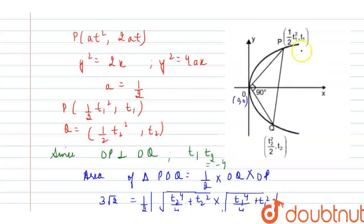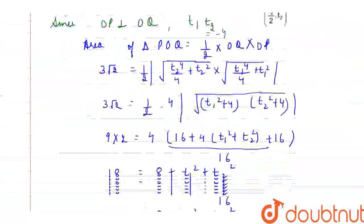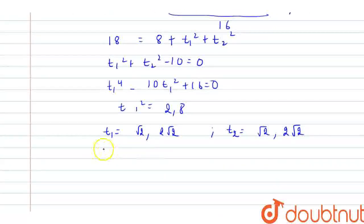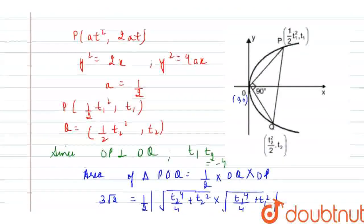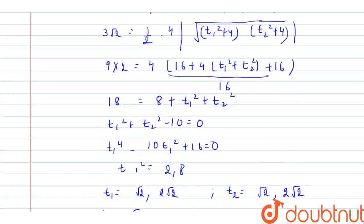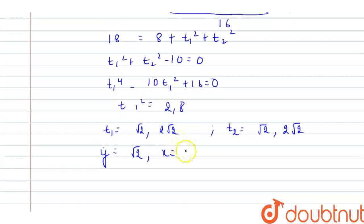Now, if this is the y coordinate for point P and Q, we are only required with point P. So if this is the y coordinate, what would be the x coordinate? x coordinate would be, if y is having value root 2, then what would be the value of x? It is half of t1 square, so this would be equal to half of t1 square, that is, 2. So, this will be having 1, therefore, one of the coordinate of point P is 1 comma root 2.